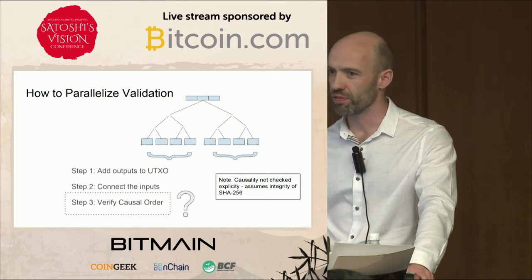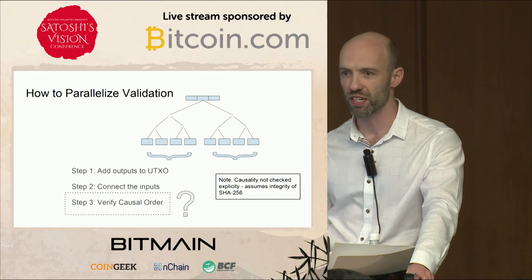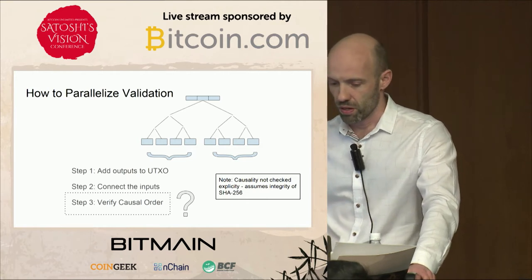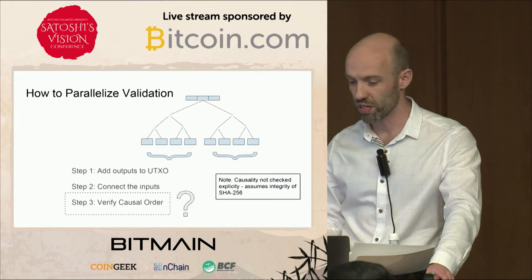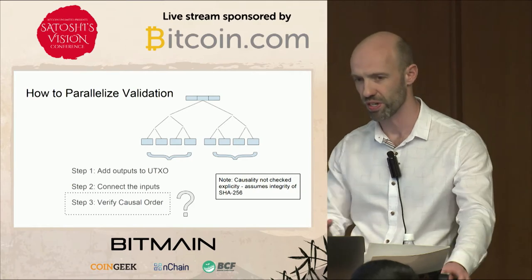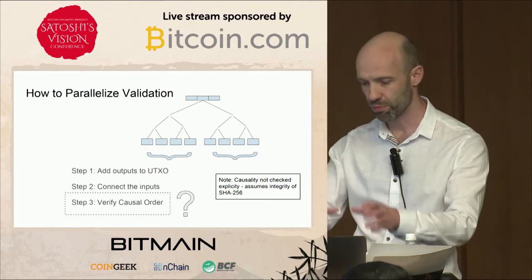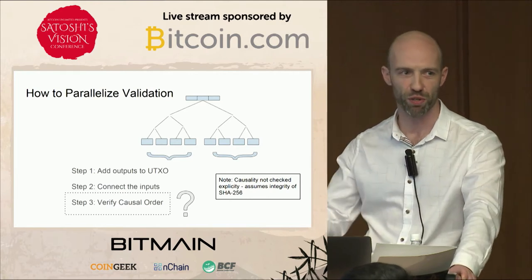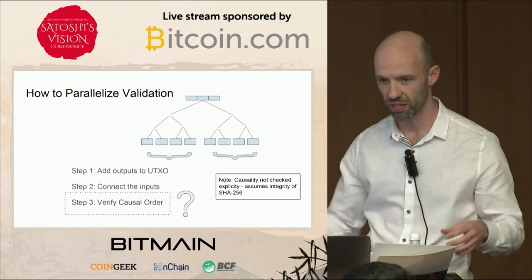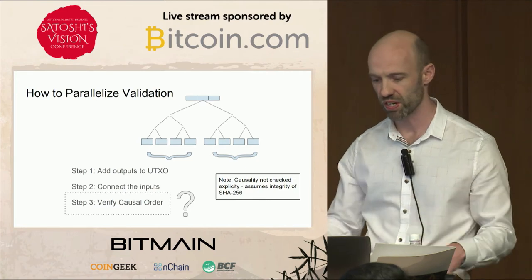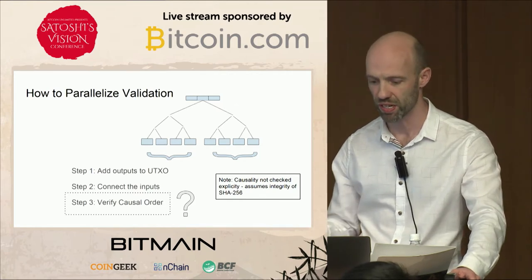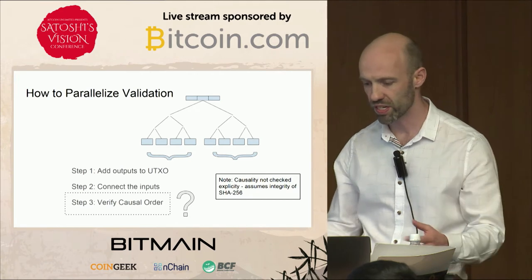This becomes more important when you think about how to parallelize validation. Right now we're scanning through linearly one after the other. The way you do it is you take bunches of transactions — I showed two batches here but in theory you could have many. The first thing you do is just add the outputs in; you don't check the inputs. You can do that in parallel, adding outputs to the UTXO across parallel processes. Then in a second parallel process you go back and check all the inputs against it. That's basically something that's parallelizable.